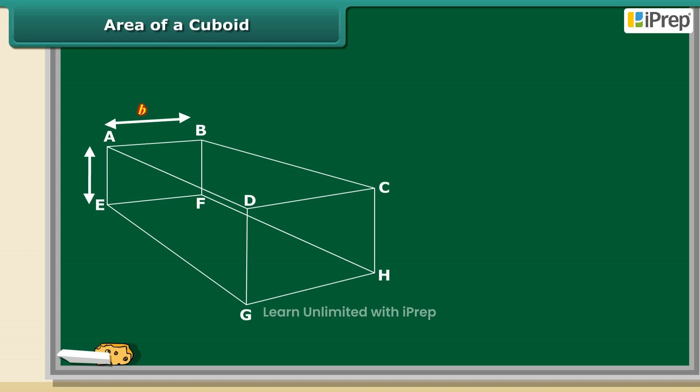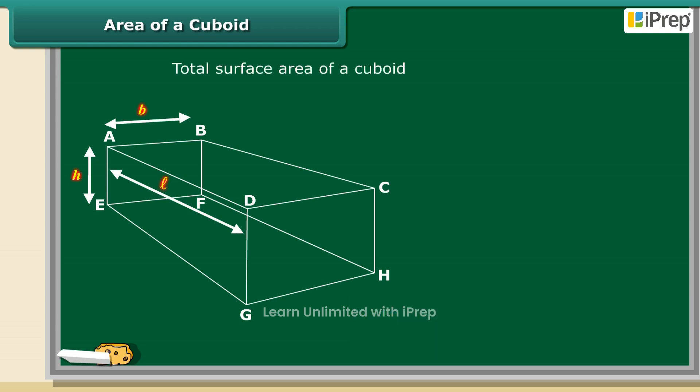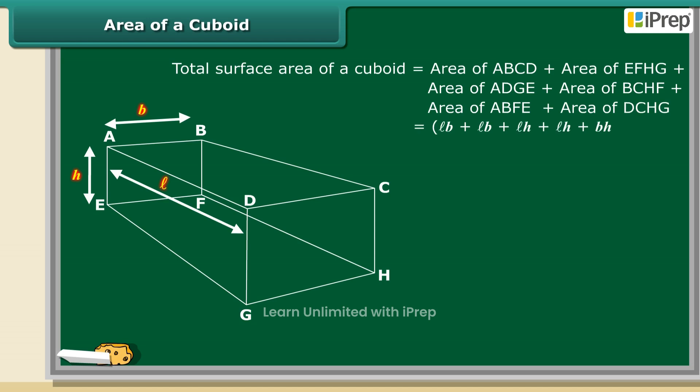Then the total surface area of cuboid is equal to the sum of the areas of six faces: ABCD, EFHG, ADGE, BCHF, ABFE, and DCHG, which is LB plus LB plus LH plus LH plus BH plus BH.